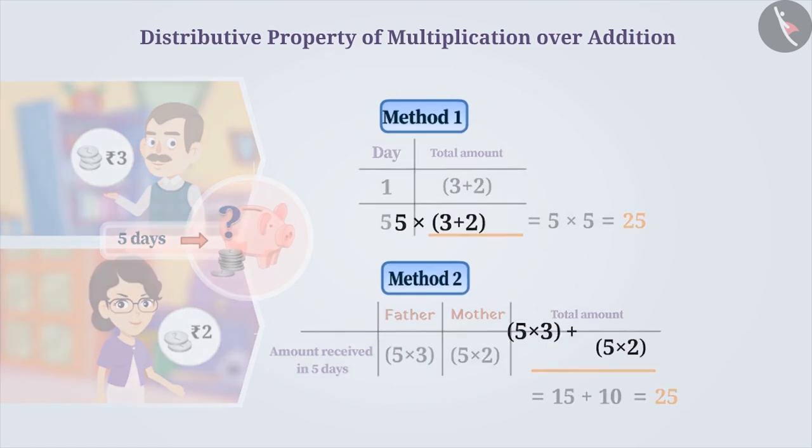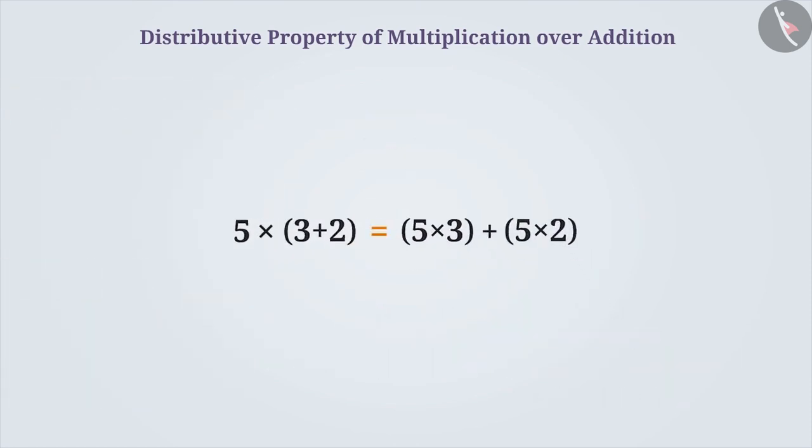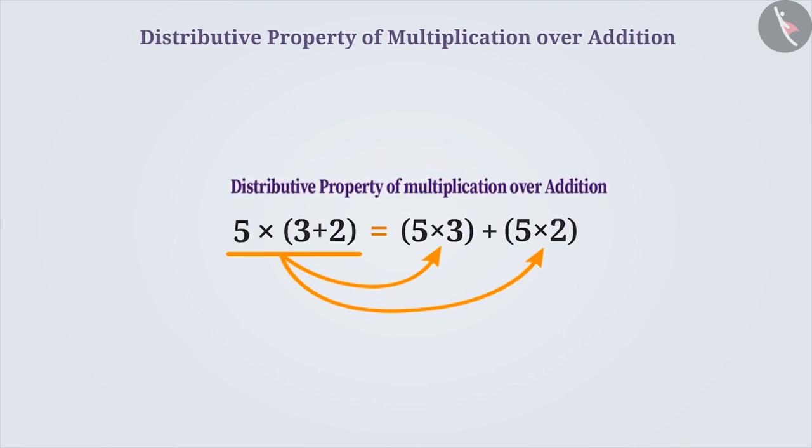What did you understand from this? Here, the sum of two numbers is split. That means, multiplication is distributed over addition.